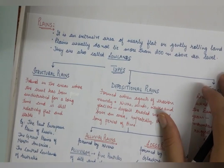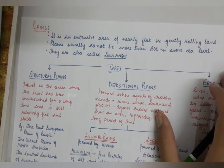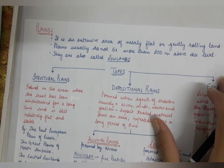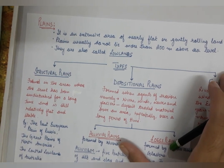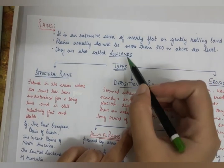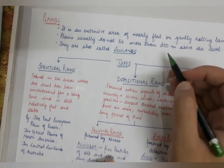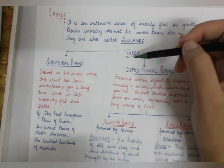To remember: the Chota Nagpur Plateau is continental and the Deccan Plateau is volcanic — these two are very important. Talking about plains, they do not have a height of more than 200 meters above sea level. They are flat areas or rolling lands. They are also known as lowlands because they are low-lying areas with height not very much above sea level.